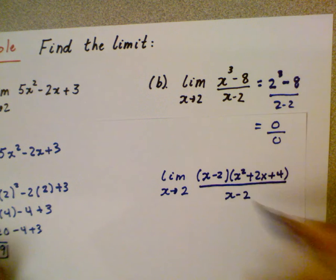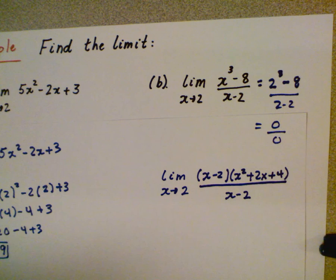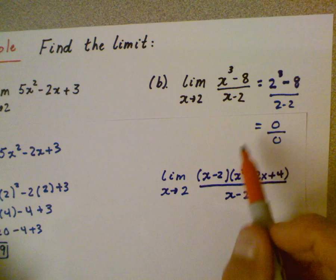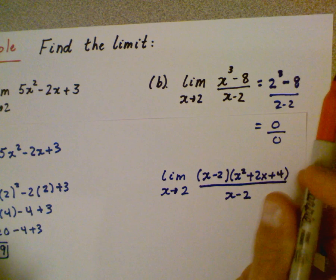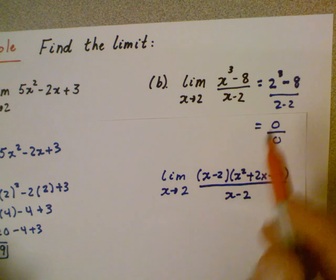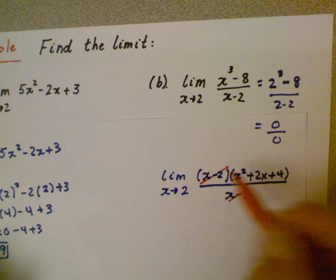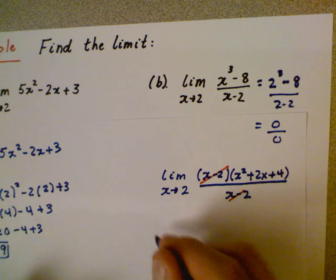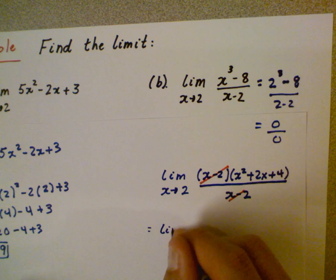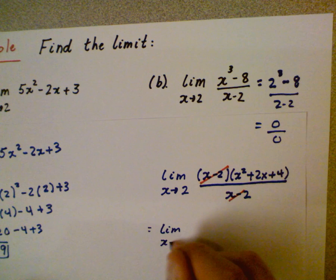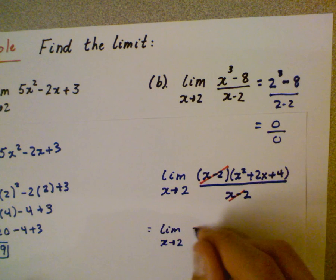Now the whole point when you factor is we're trying to eliminate the problem. It's not a problem to have a 0 in the numerator. It's a problem to have a 0 in the denominator. So we are going to remove this - it becomes 1, right? Because those are common terms. And we have essentially removed that problem of being able to plug in 2. So now I go ahead and rewrite what I have left.